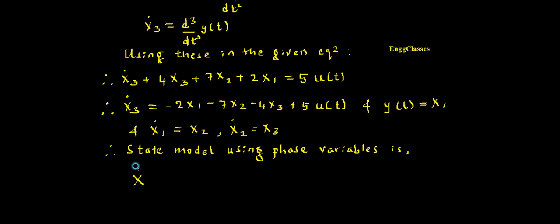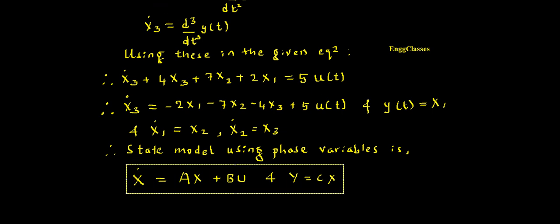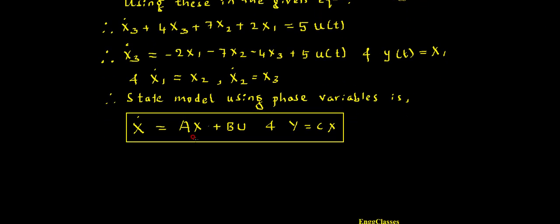X-dot equals capital A times capital X plus capital B times U, and the output Y equals C times X, where A, B, and C are all matrices. This expression I must know. Once I know this, I need to expand it.